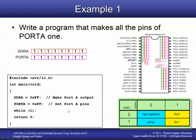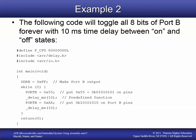Here's another example: we want to have the pins of Port B oscillate between two values. They're all going to be outputs, and we want some to be on and some to be off, changing that pattern every 10 milliseconds. We're now including the delay.h header file so that we can use the delay_ms function, which gives us a millisecond delay.